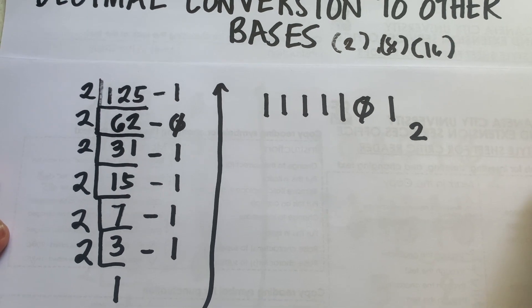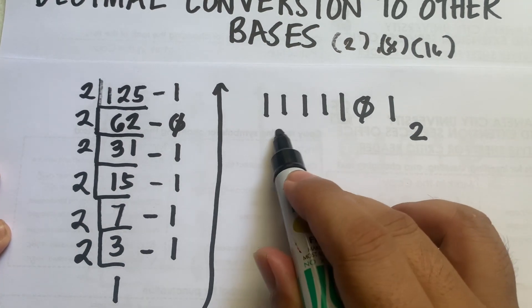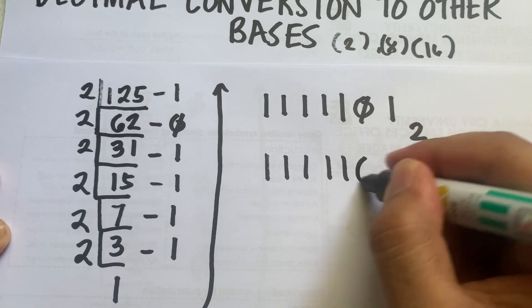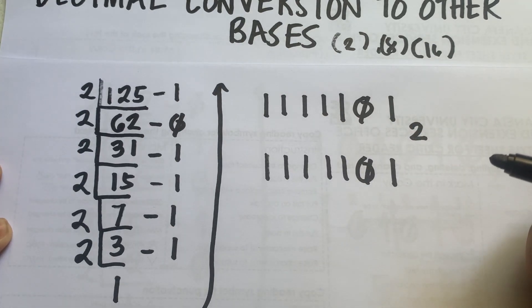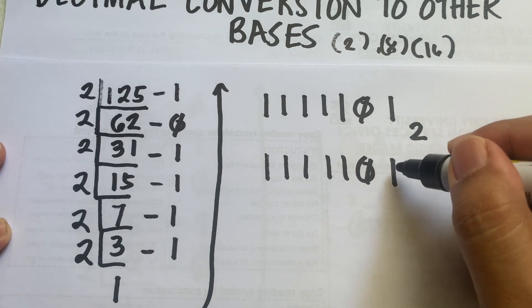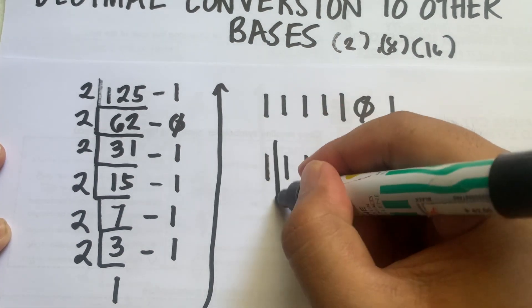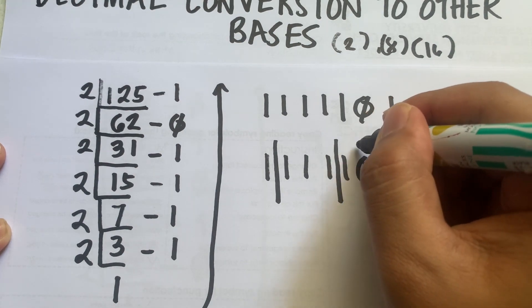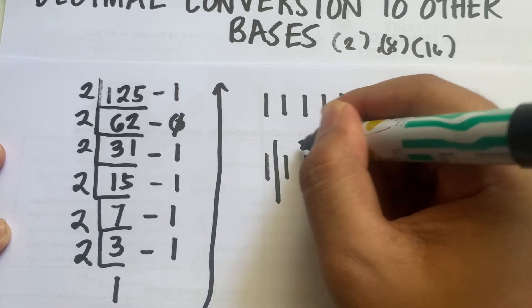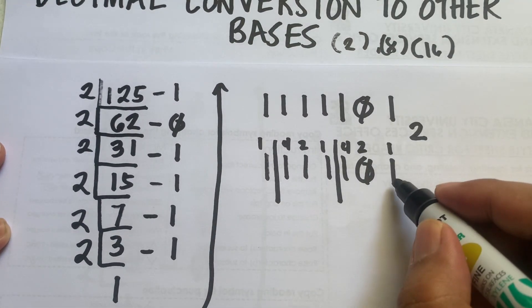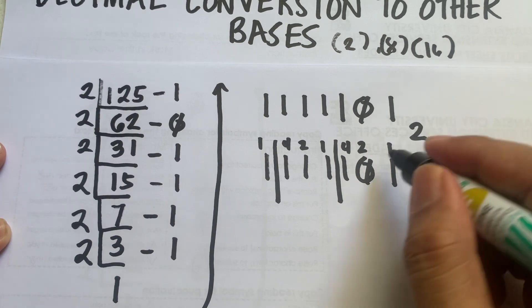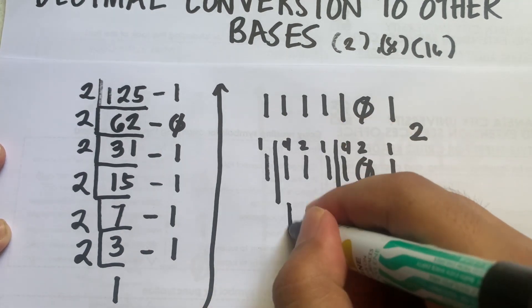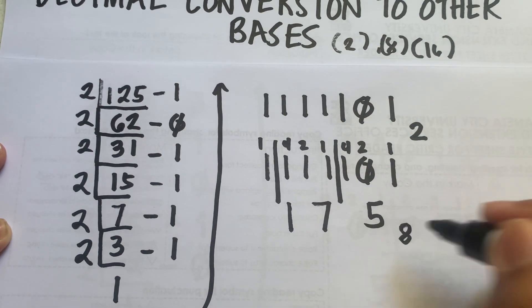To convert 125 to octal, we rewrite the binary digits 1111101 and group them into sets of 3 starting from the right. So we have the group 1, 0, 1 and the group 1, 1, 1, and then 1 remaining. Using positional values 1, 2, 4: the first group gives 1 plus 4 equals 5; the second group gives 1 plus 2 plus 4 equals 7; and the remaining digit is 1. So the octal equivalent of 125 is 175.